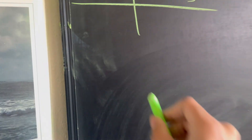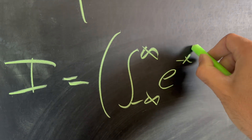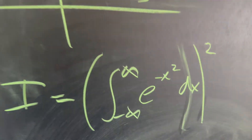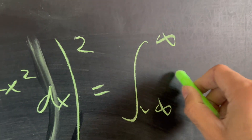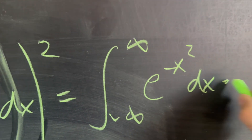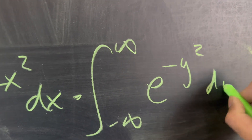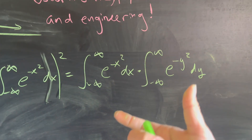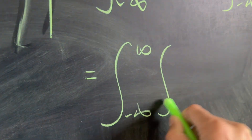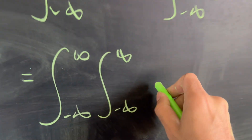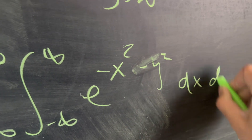The way we're going to solve this is we're going to let our integral I equal the integral from negative infinity to infinity of e to the negative x squared dx, and we're going to square this. That's going to separate into the integral of e to the negative x squared with respect to x, times another integral of e to the negative y squared — just changing the dummy variable. Now we can combine this into a double integral of e to the negative (x squared plus y squared) with respect to x and y.